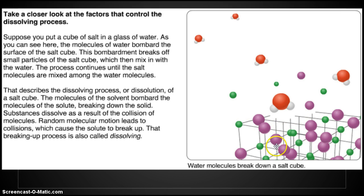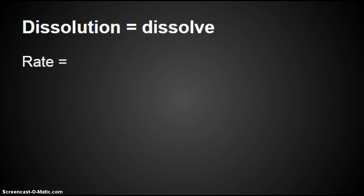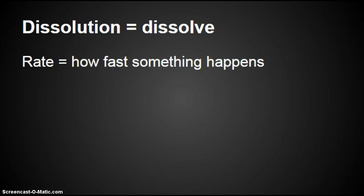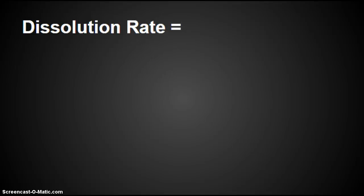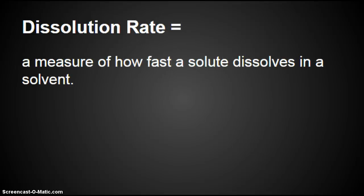Remember, because this was a solid, the molecules were just vibrating and staying really close together. The water is liquid — it moves farther and faster, it hits the solid, and breaks everything apart. So dissolution equals dissolve. What does the word rate mean? Rate is how fast something happens. Therefore, dissolution rate means a measure of how fast a solute dissolves in a solvent.